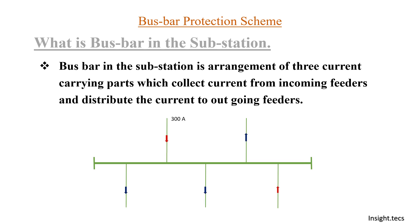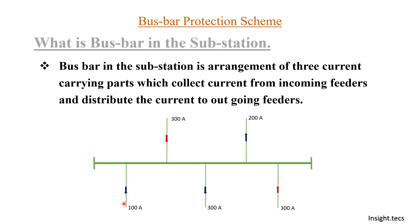Now let us understand with the help of an example what we want to see in the bus bar protection scheme. Basically we want to understand that the total incoming current and the total outgoing current at this junction is zero — the difference between incoming and outgoing is zero. For example, assume 300 amperes is the incoming current at feeder 1 and 300 amperes at feeder 2, so total incoming current is 600 amperes. On the outgoing side: 200 amperes through feeder 1, 300 amperes through feeder 2, and 100 amperes through feeder 3 — total outgoing is also 600 amperes. So the difference is zero.